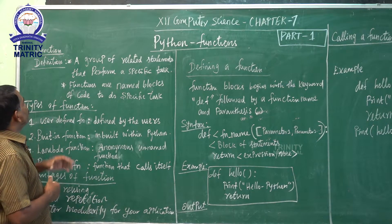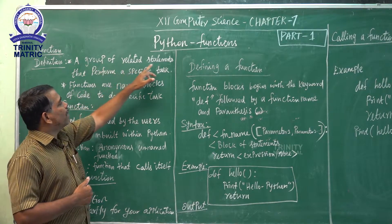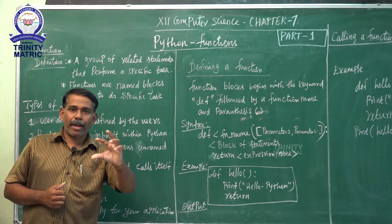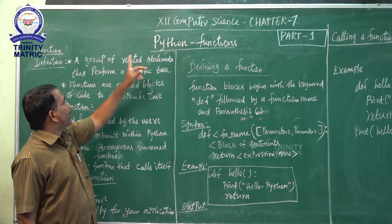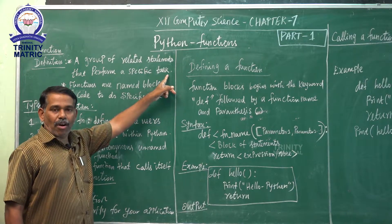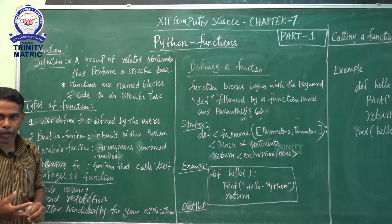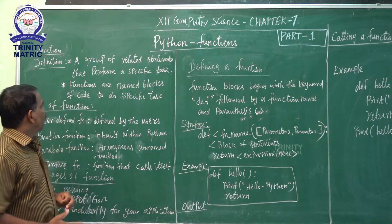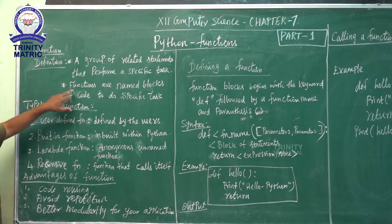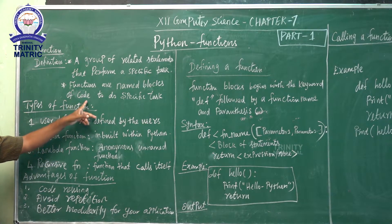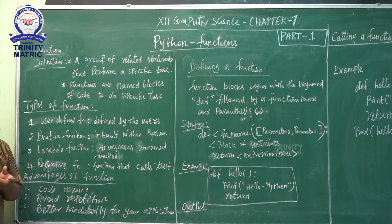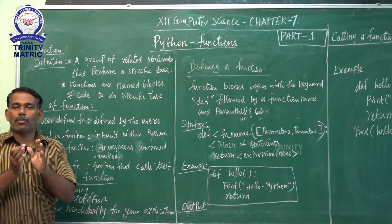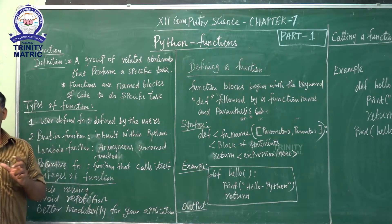Define function: a group of related statements. A function is a sub-program which has one or more statements. A group of related statements that perform a specific task is called a function, module, or method. Another definition: functions are named blocks of code that are designed to do a specific task.